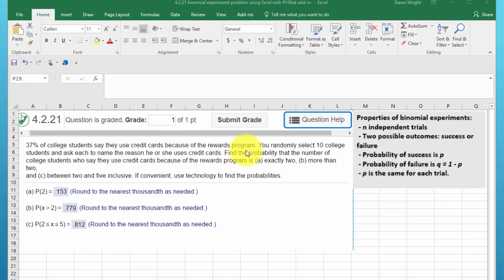You randomly select 10 college students and ask each to name the reason he or she uses credit cards. Find the probability that the number of college students who say they use credit cards because of the rewards program is exactly two, more than two, and between two and five inclusive.